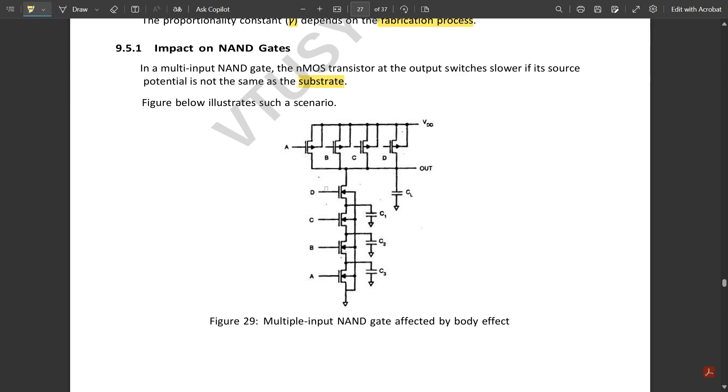According to the body effect, in the pull-up part the pMOS transistors would be connected to Vdd, and in the nMOS transistors all the body terminals are connected back to the ground.